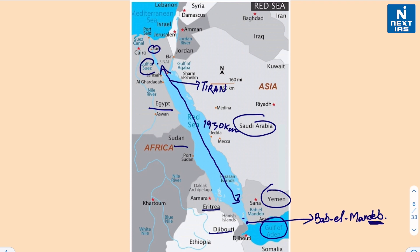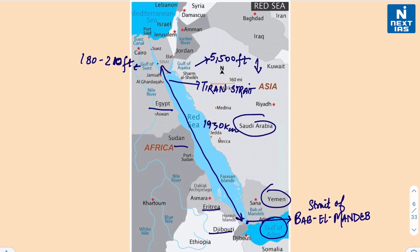Coming back to the Gulf of Suez and the Gulf of Aqaba: the Gulf of Suez is shallow, only about 180 to 210 feet in depth, whereas the Gulf of Aqaba is much deeper at around 5,500 feet. As the Red Sea connects the Mediterranean Sea via the Suez Canal further to the Gulf of Aden and Arabian Sea, it is one of the most heavily traveled waterways in the world, carrying maritime traffic between Europe and Asia.